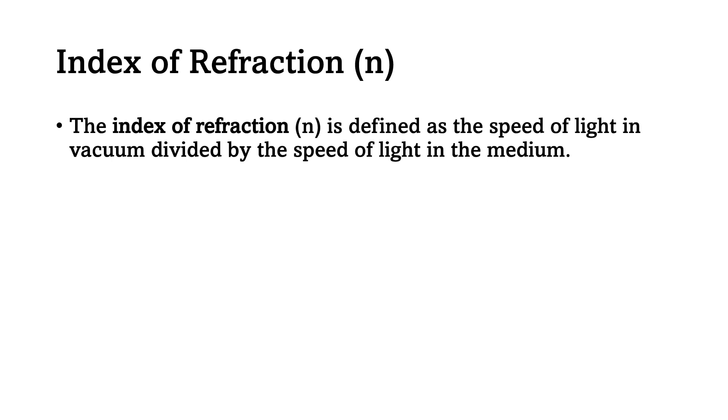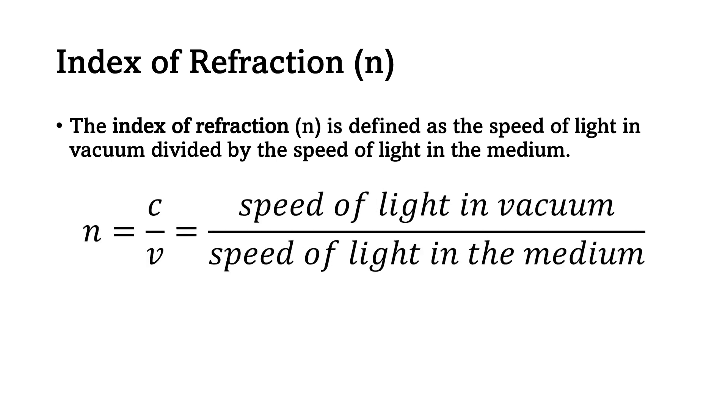The index of refraction, denoted by small letter N, is defined as the speed of light in vacuum divided by the speed of light in the medium. That is, N equals C over V. C is the speed of light in vacuum which has a value of 3 times 10 raised to 8 meters per second, and V is the speed of light in the medium.